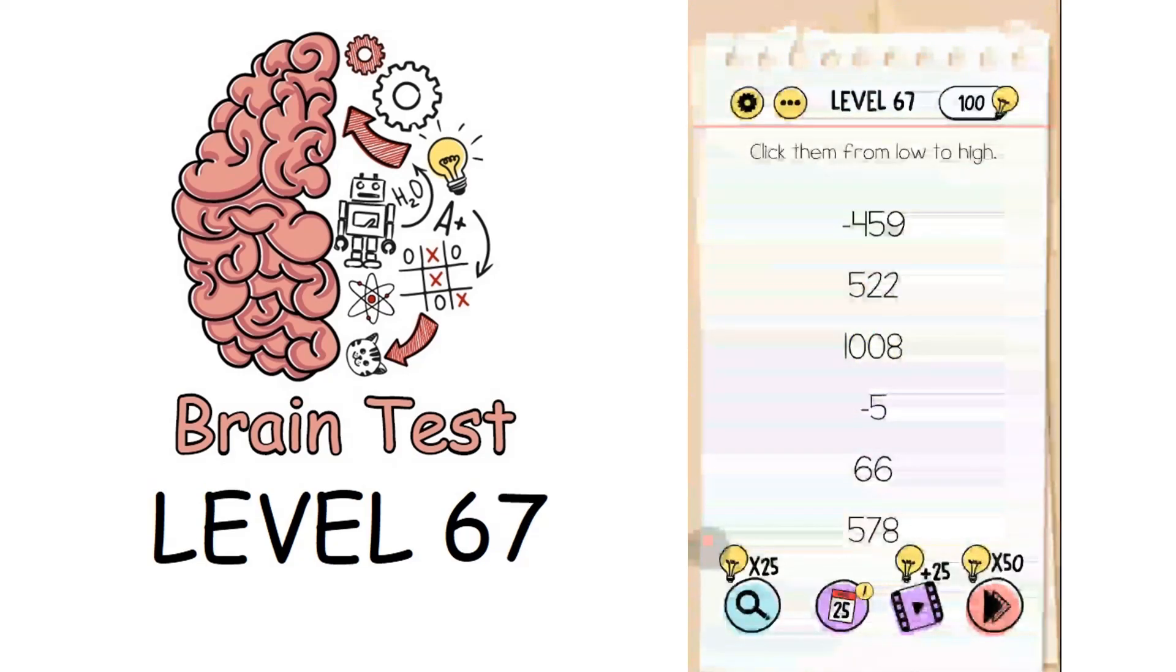Now we're on to level 67: click them from low to high. If we click on low to high based on the digits, clicking this, then this, this one, this one, it won't solve the puzzle. We have to think out of the box. Click from low to high position, from down to the up one. That solves the puzzle.